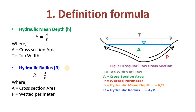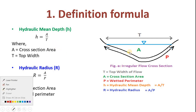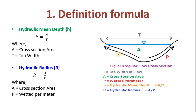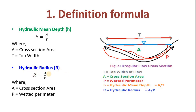Definition and formula. Hydraulic mean depth is defined as the area divided by the top width. Hydraulic radius means the same area is divided by the wetted perimeter. When we divide area by top width we get hydraulic mean depth, and when we divide area by wetted perimeter we get hydraulic radius.